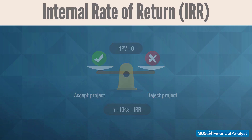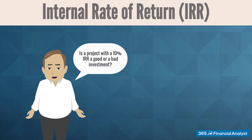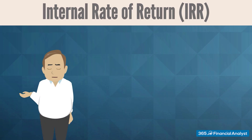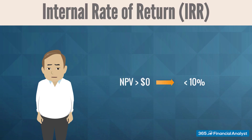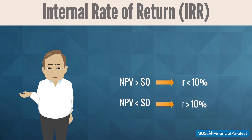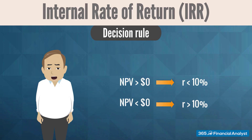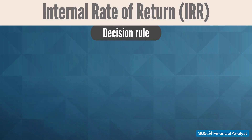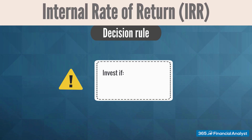Let's answer the following question: is a project with a 10% IRR a good or a bad investment? Well, that depends on the discount rate we will use. NPV is positive for discount rates below 10% and negative for discount rates above 10%. Thus, the IRR rule goes hand-in-hand with the NPV rule we introduced earlier. The IRR rule states: accept an investment if its IRR is greater than the discount rate; reject it if the IRR is less than the discount rate; and stay indifferent if the IRR is equal to the discount rate. This rule is very important, so let it stick in your mind.